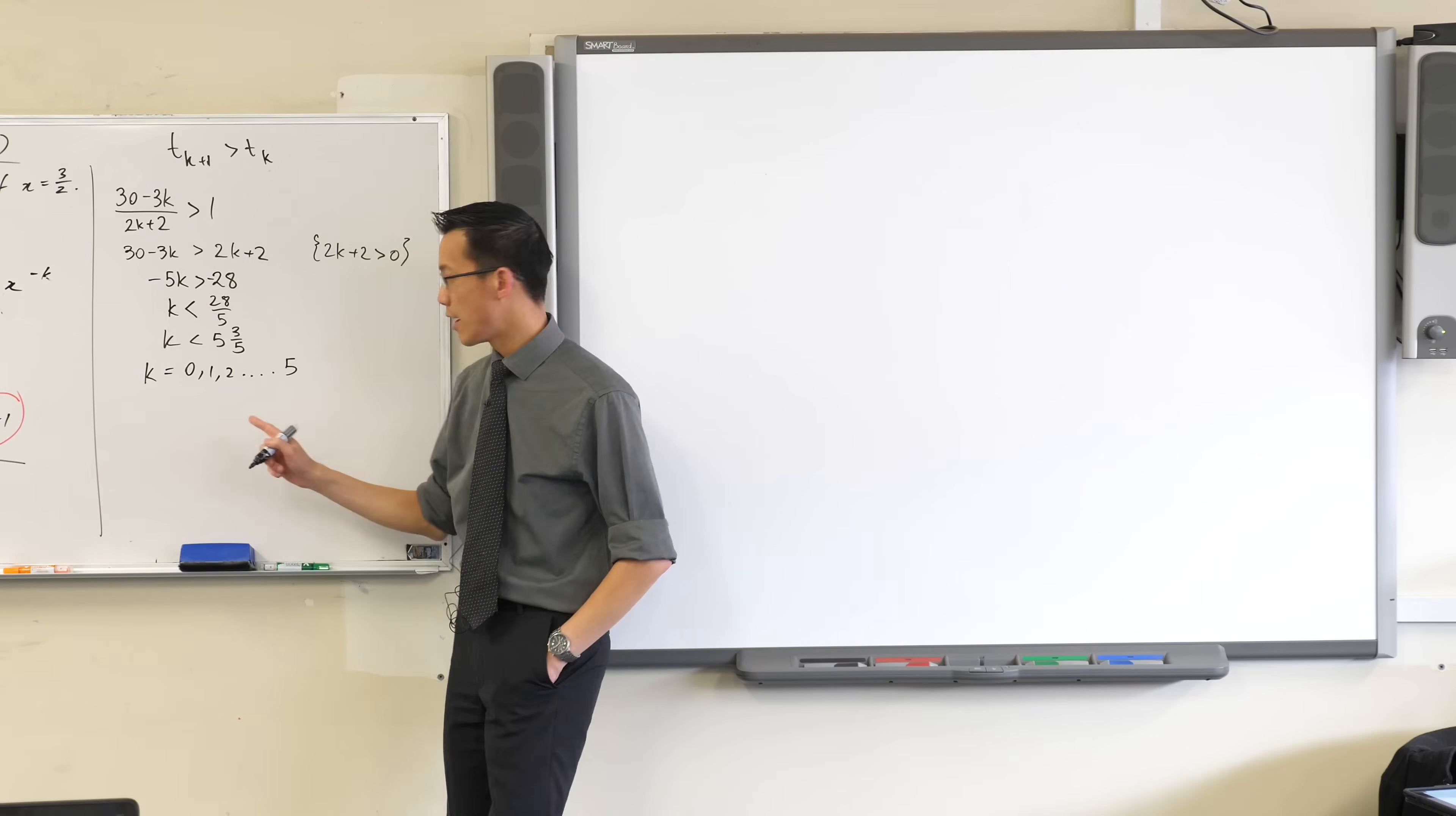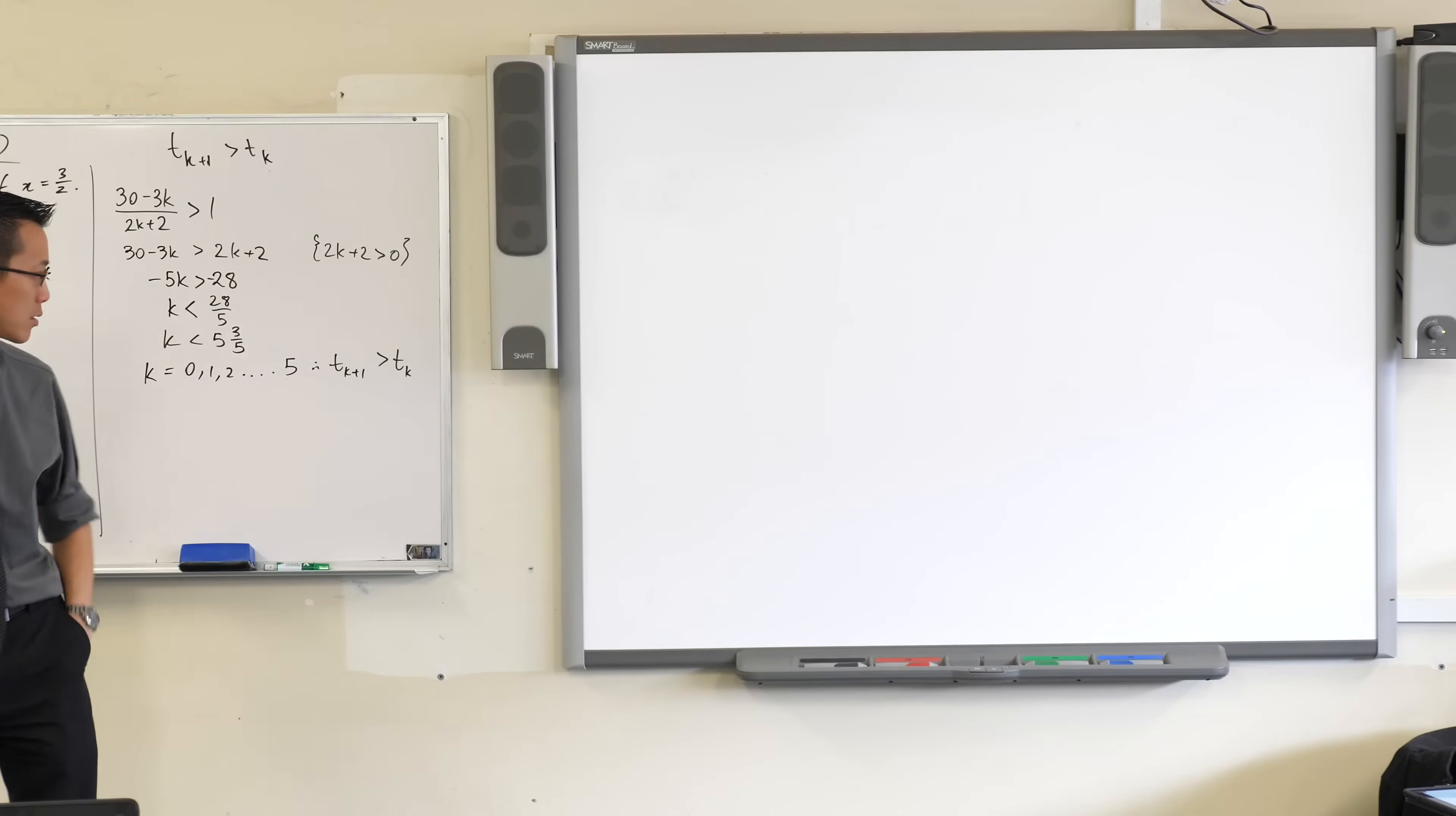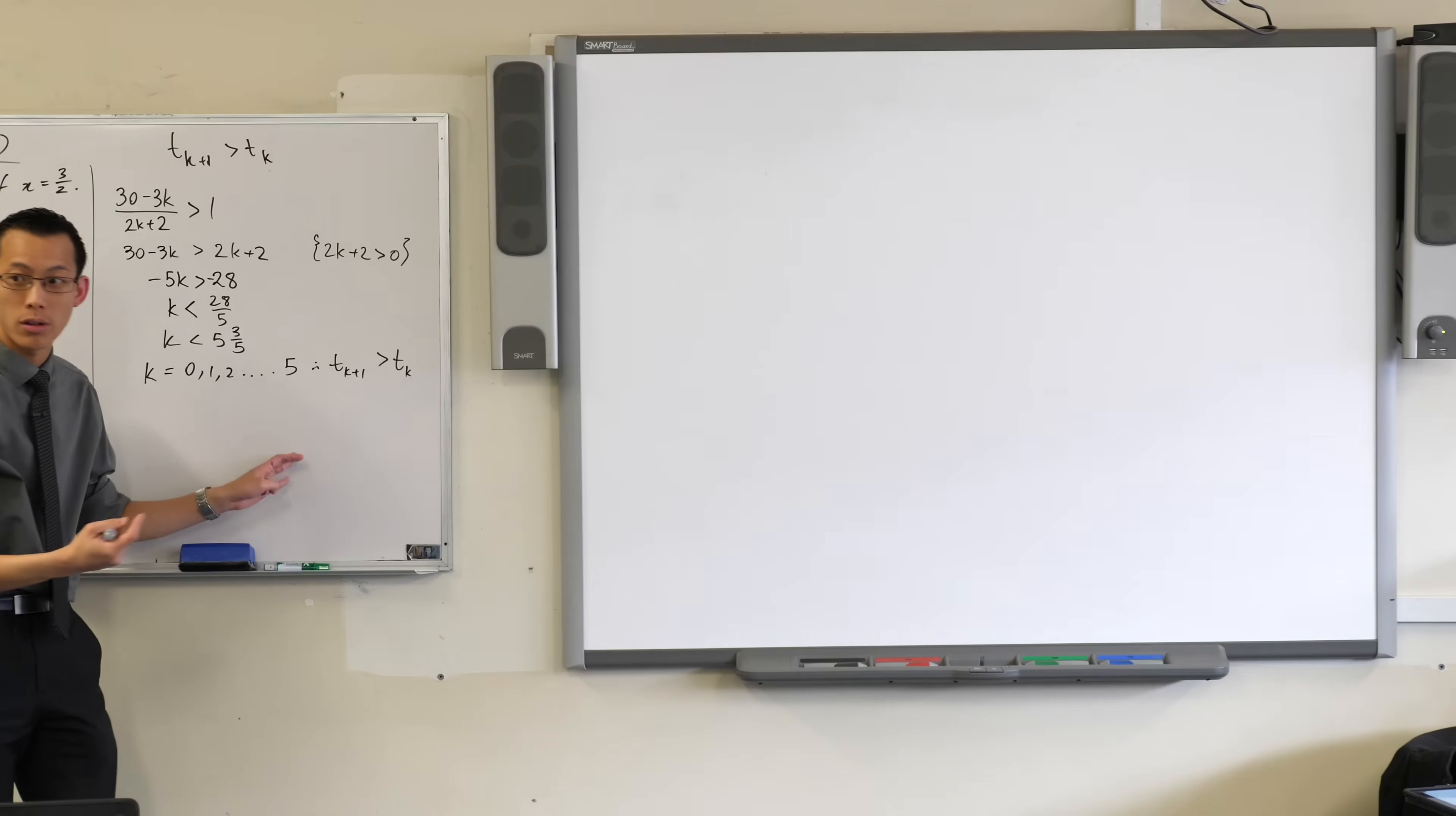So whenever k has one of these values, that means that t of k plus 1 will be bigger than t of k. Now clearly we're interested in the biggest one of these. So 0, 1, 2, it's just going to keep on going. Go straight to the last one, which is 5. If you put k equals 5 into here, what inequality results?